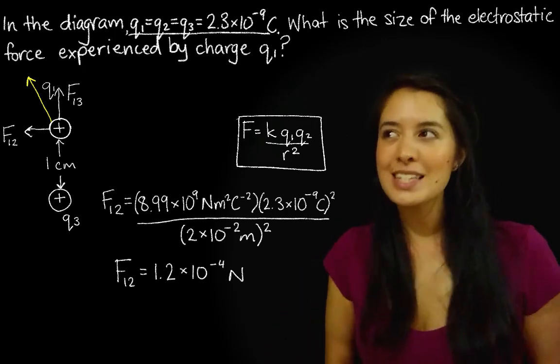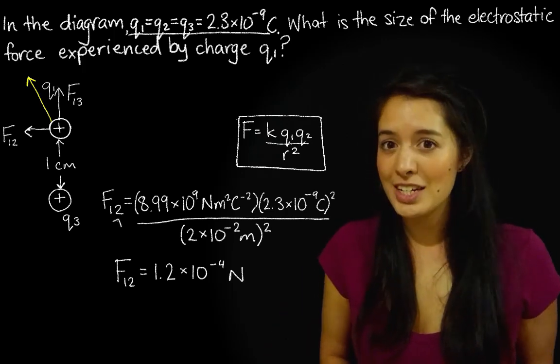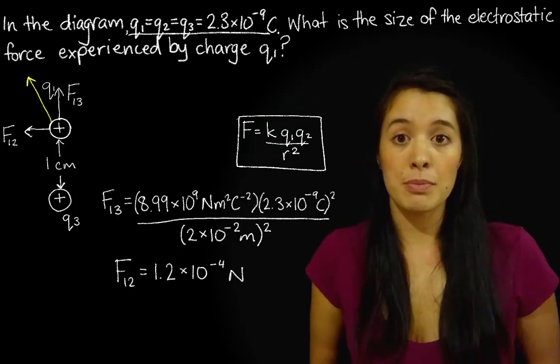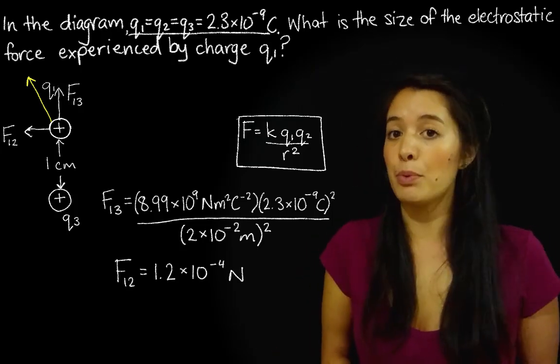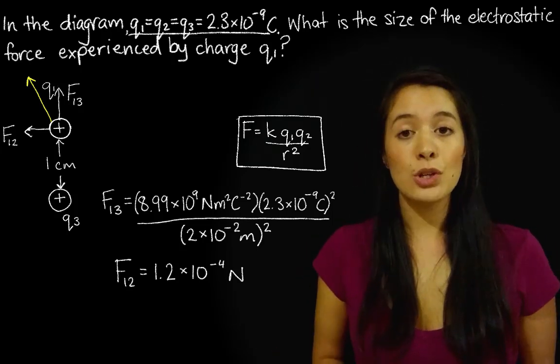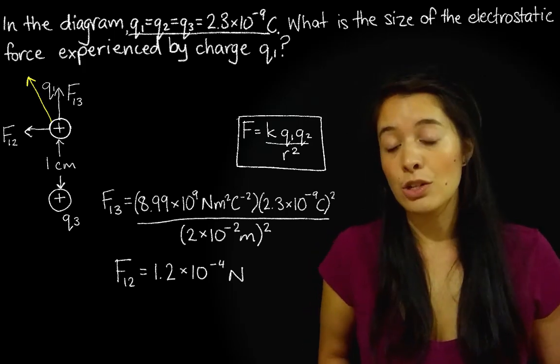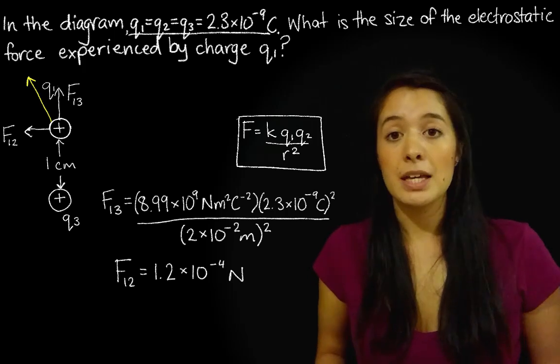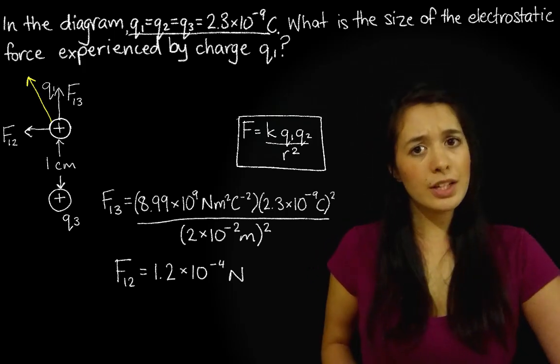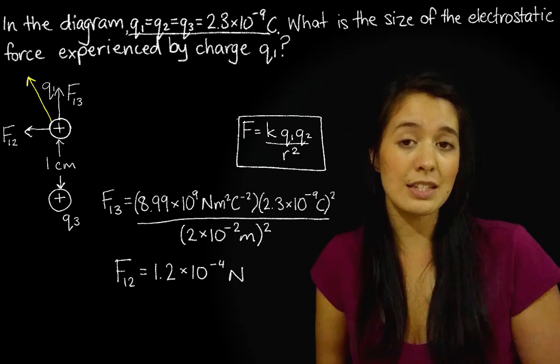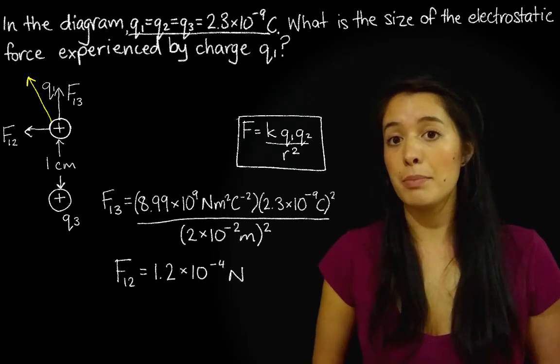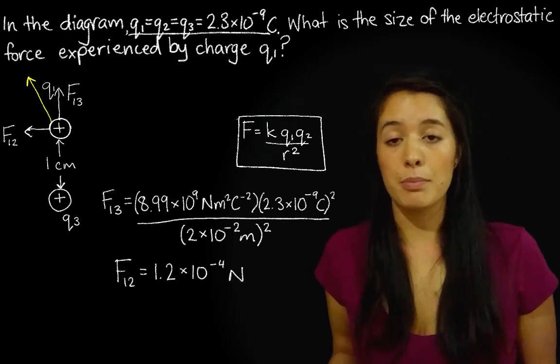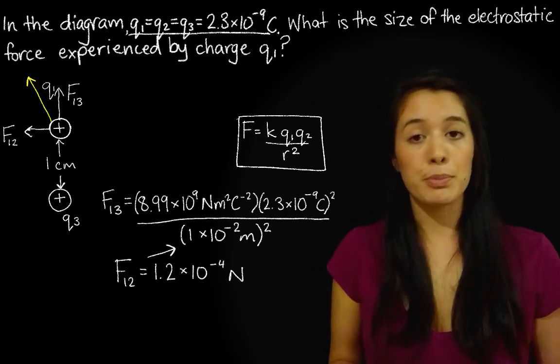So now looking back at Coulomb's law, instead of writing out the whole equation again, let's see what we can do. So K, Coulomb's constant, is going to be the same because it's a constant. So we can leave the 8.99 times 10 to the 9. And Q1 and Q2, or in this case Q3, is again going to be the same, 2.3 times 10 to the negative 9, because all the charges are equal. The only thing that's going to change is the distance separating them, because Q3 is separated by a distance of 1 centimeter to Q1, whereas Q2 was separated by 2 centimeters. So let's just rub out the 2 and put a 1.